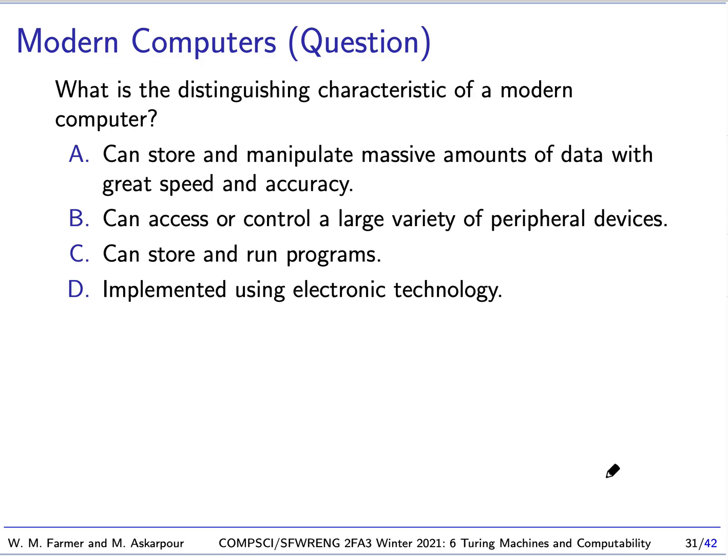You have four choices. The computer can store and manipulate massive amounts of data with great speed and accuracy. It can access or control a large variety of peripheral devices, devices like mouses and keyboards and printers and so forth. It can store and run programs. It is implemented using electronic technology. I'll give you a moment to think about this and see if you can come up with your answer.